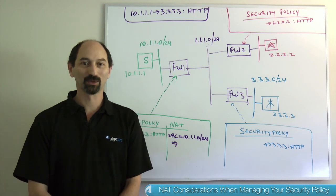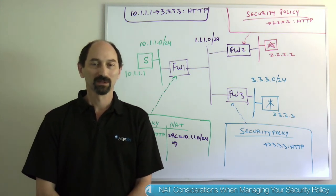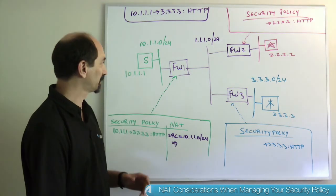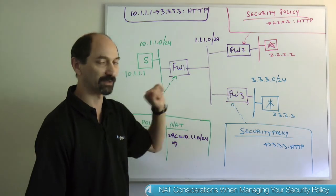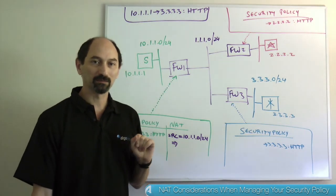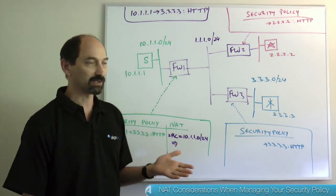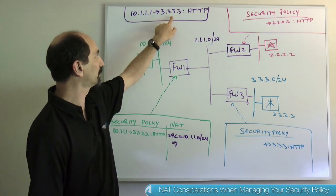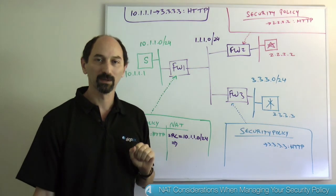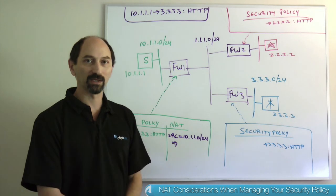Hello and welcome to Security Management 201. I'm Professor Wohl and today we're going to be talking about NAT considerations when managing your security policy. Let's look at a typical simple example. Suppose your organization has three firewalls — firewall one, firewall two, firewall three — and a particular business owner made a change request because they're powering up a new application and need to allow traffic from 10.1.1.1 to 3.3.3.3 using the HTTP service. You have to configure your security policies on the firewalls to allow that traffic through.